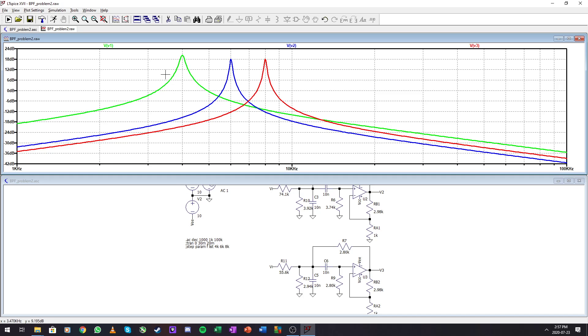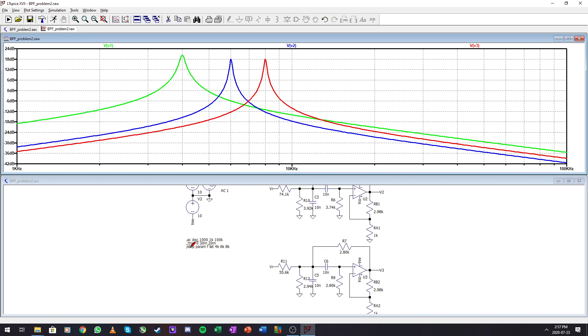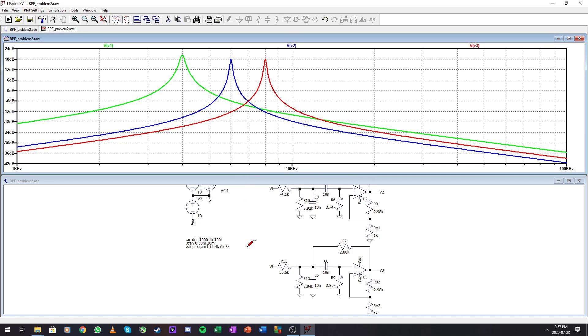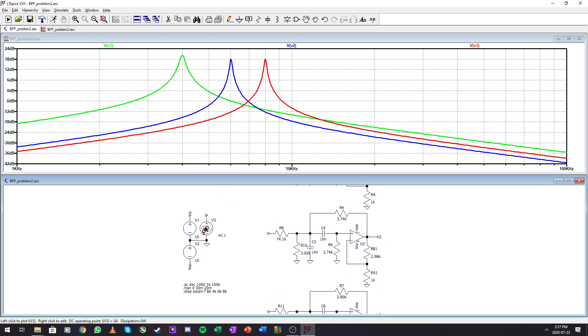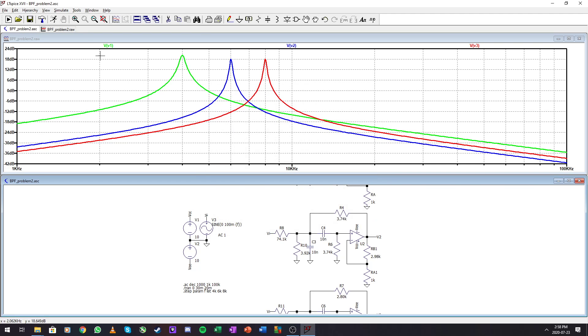And let's see how this operates within transient conditions. So let's set this up for a transient response. Let's step the frequency value, so I'm going to run through for Vin a 4, 6, and 8 kilohertz signal. Let's put this on a sine, 100 millivolts in, and a frequency of f.